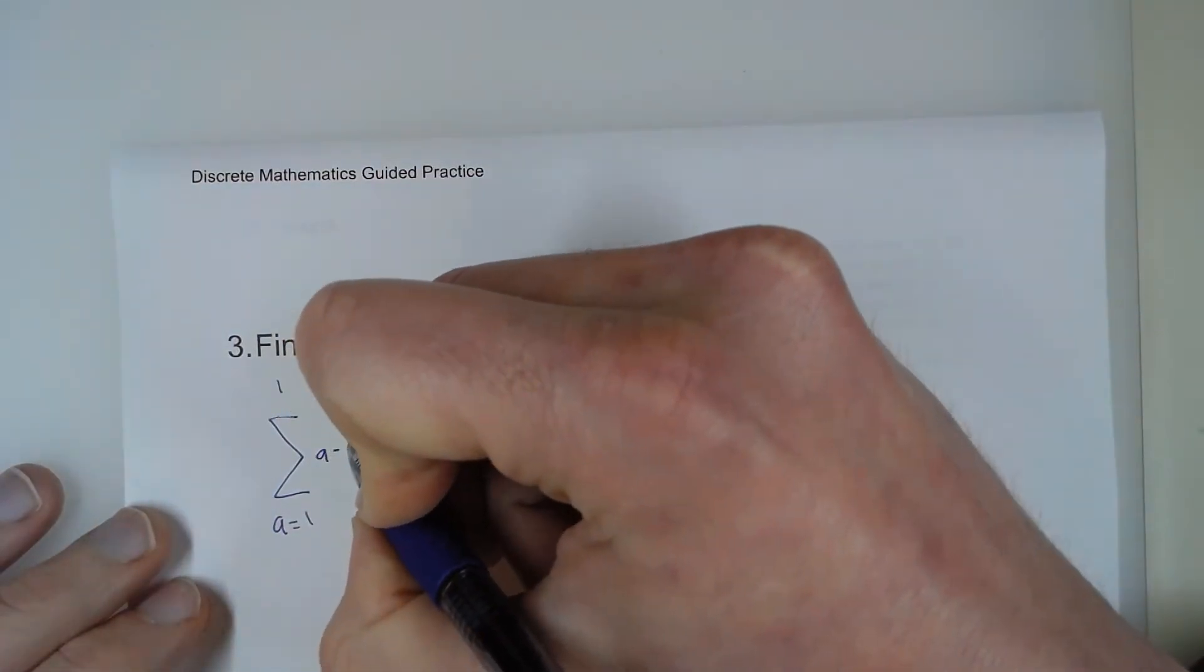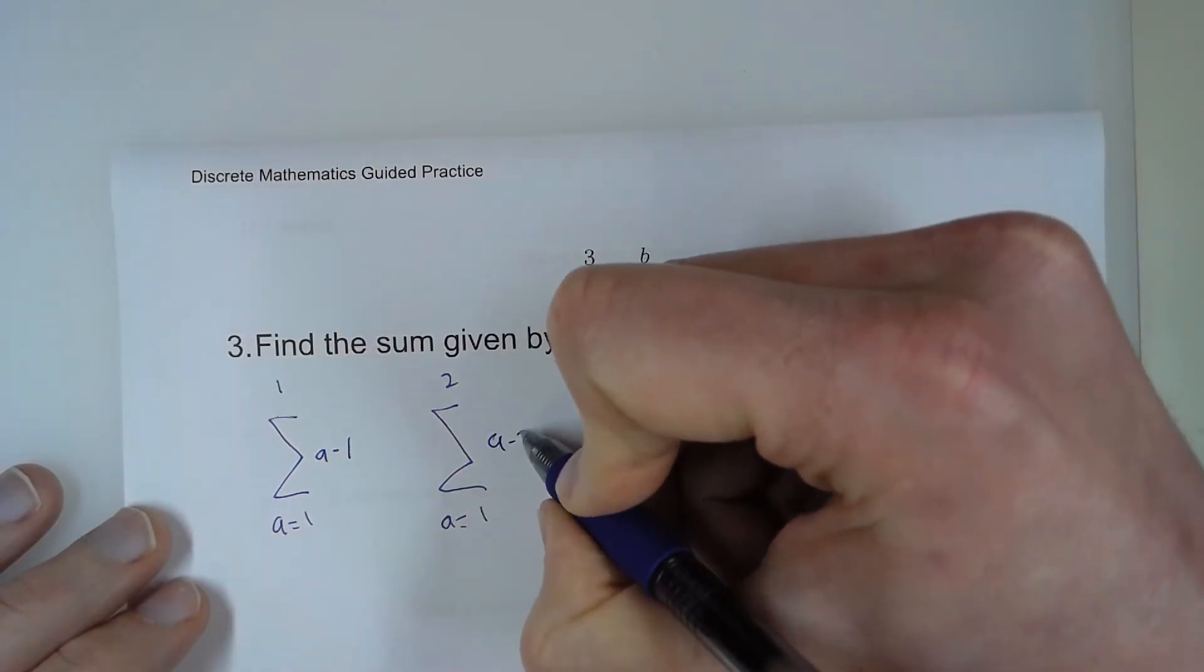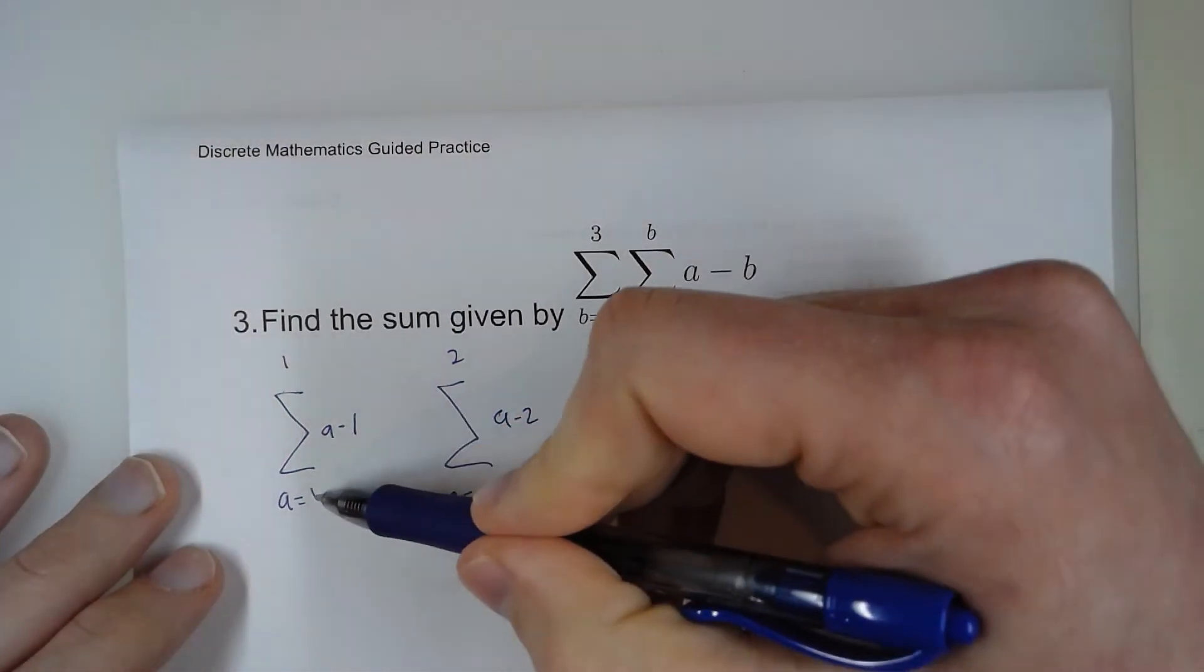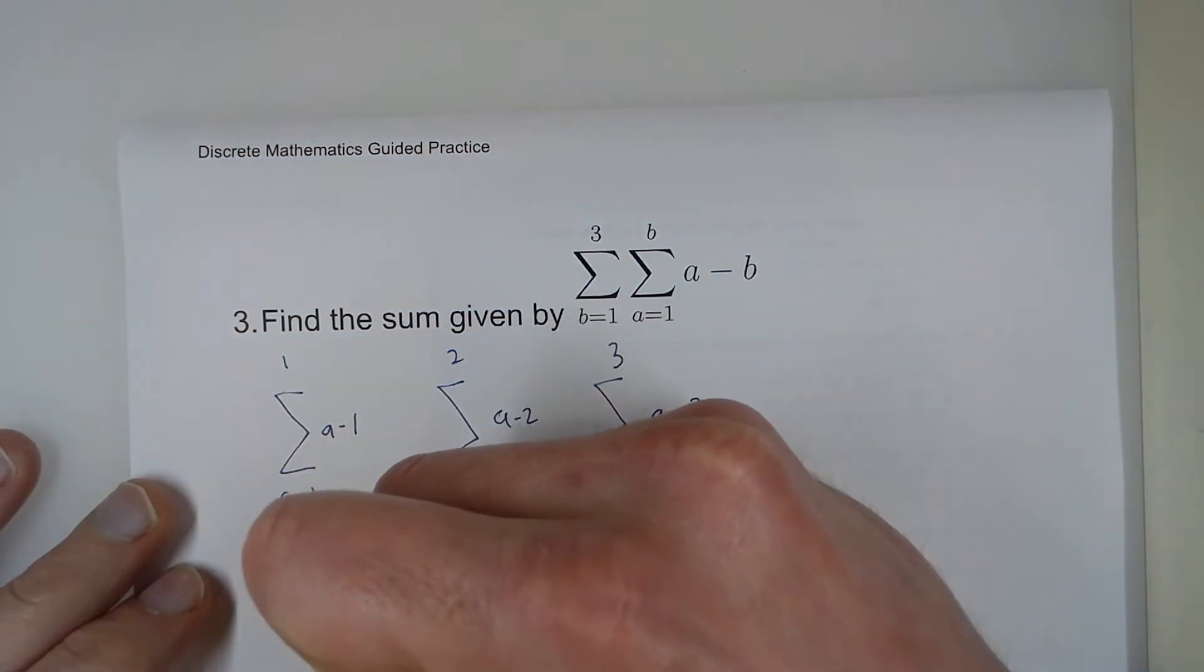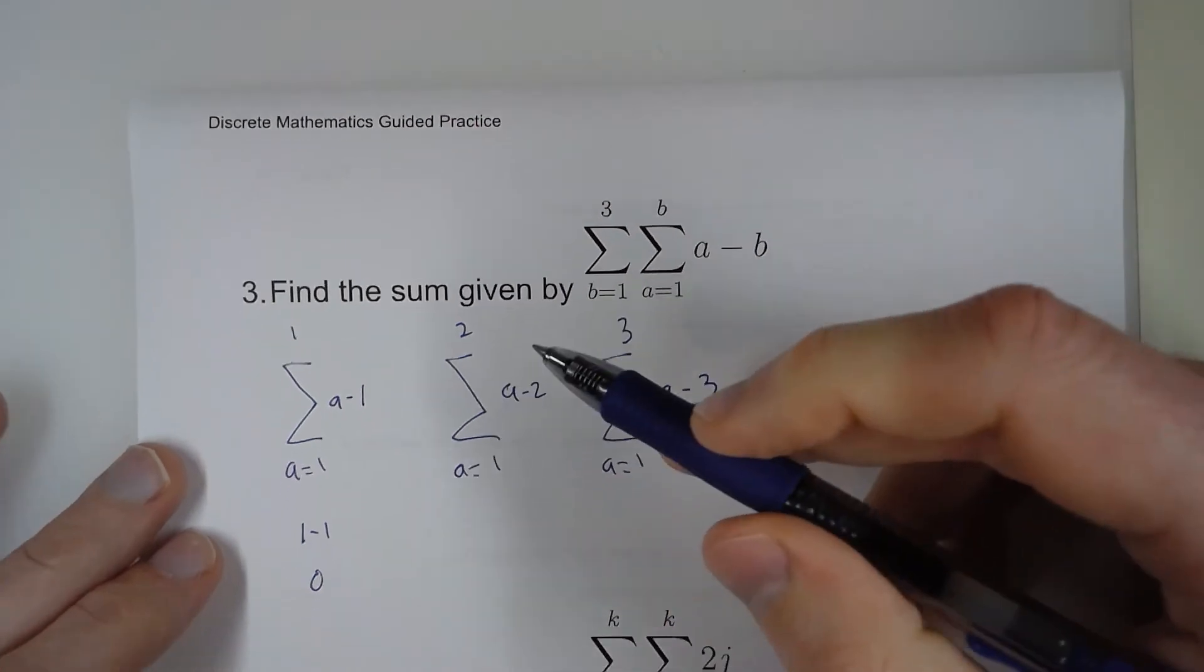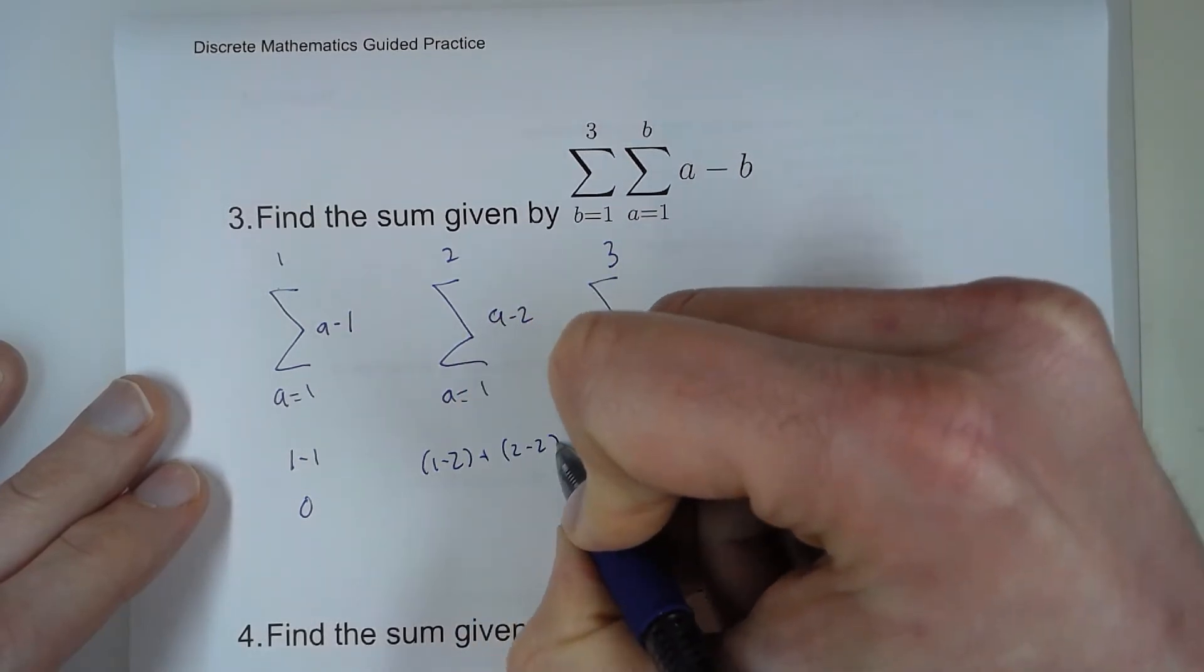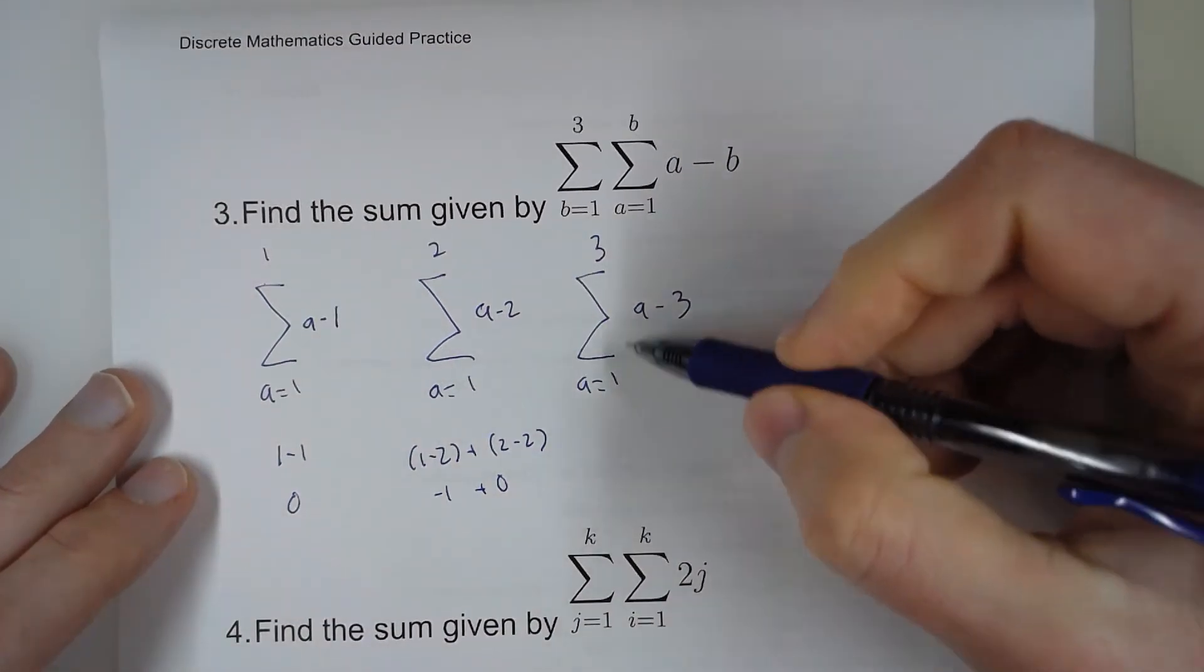So this one is going to be a minus 1, because that's what I set b equal to here, a minus 2 here, and then a minus 3. So here I'm plugging in 1 as my first number, but it's also my last number. So this is just 1 minus 1, which is 0. Here I'm plugging in 1 and 2. So I have 1 minus 2, plus 2 minus 2, so I have negative 1 plus 0.